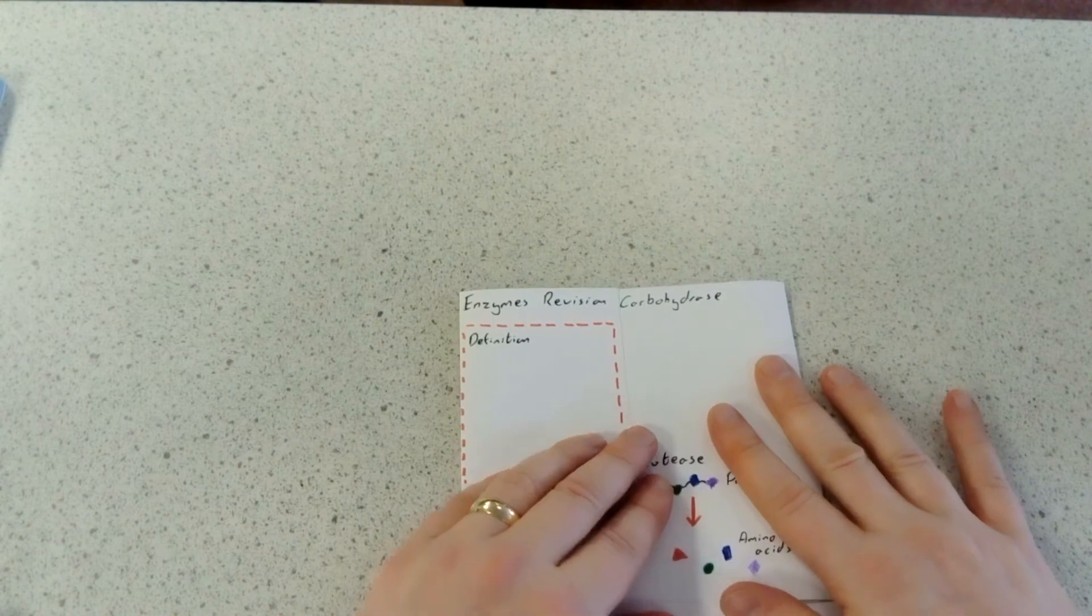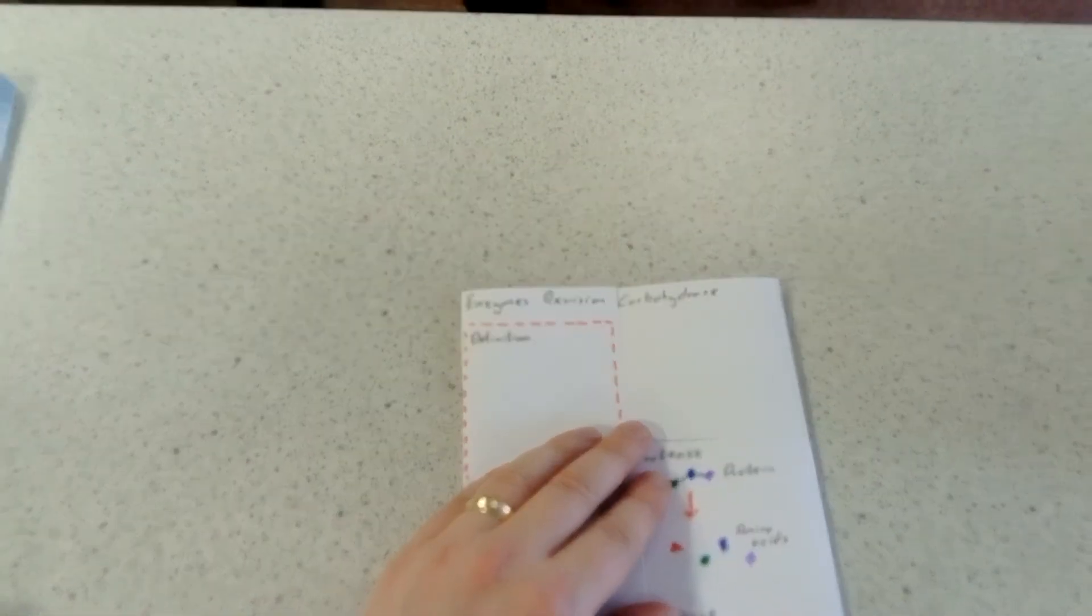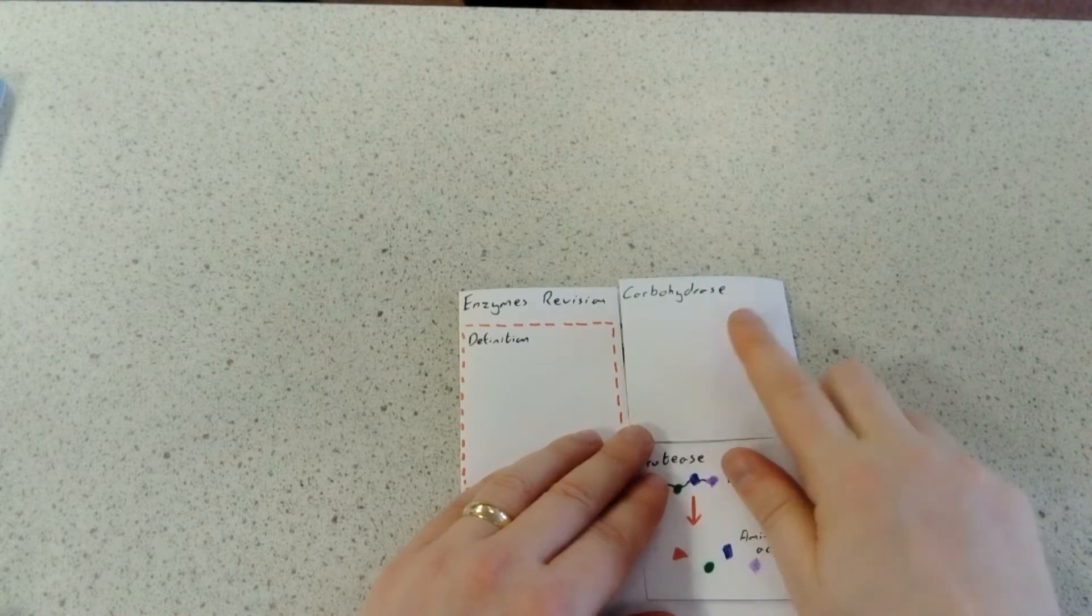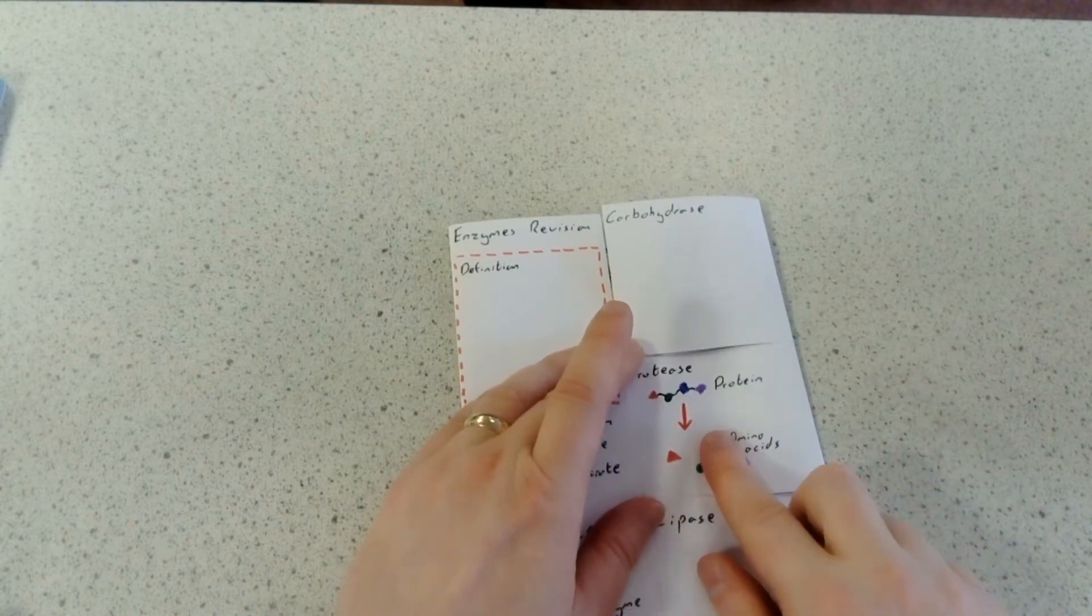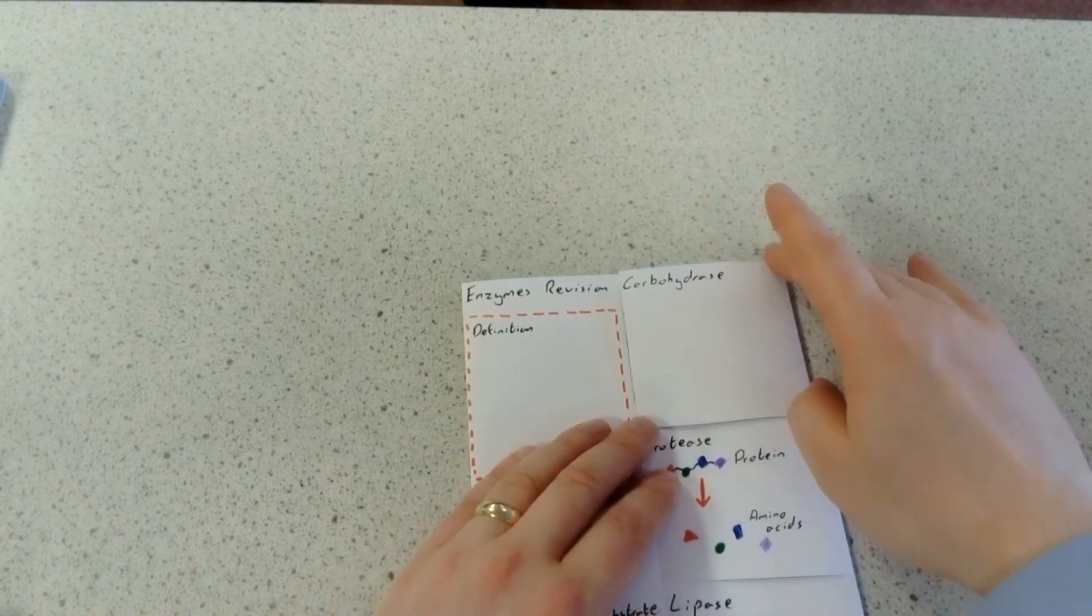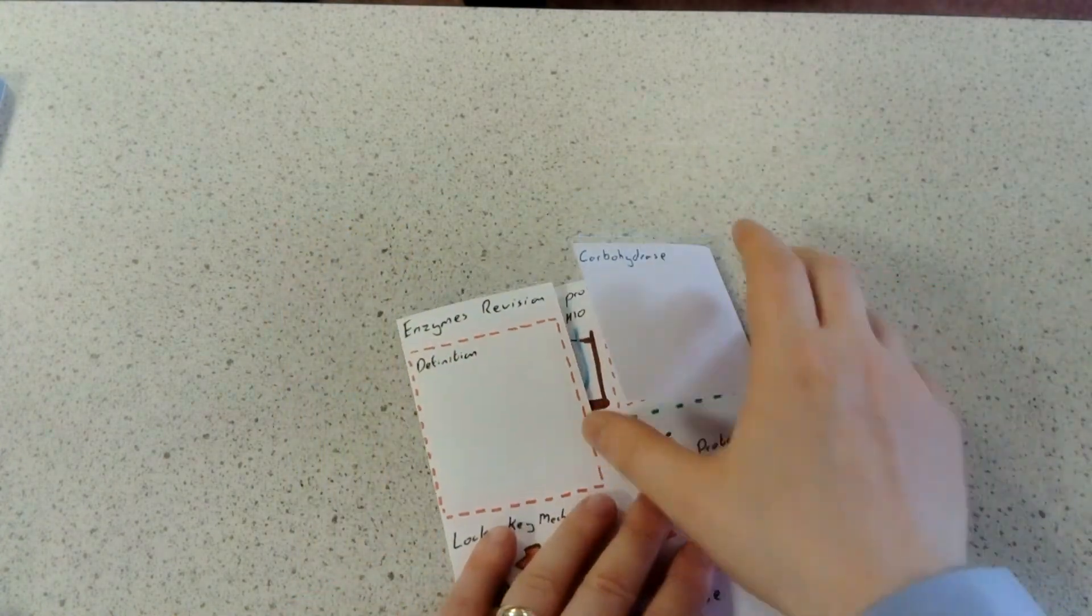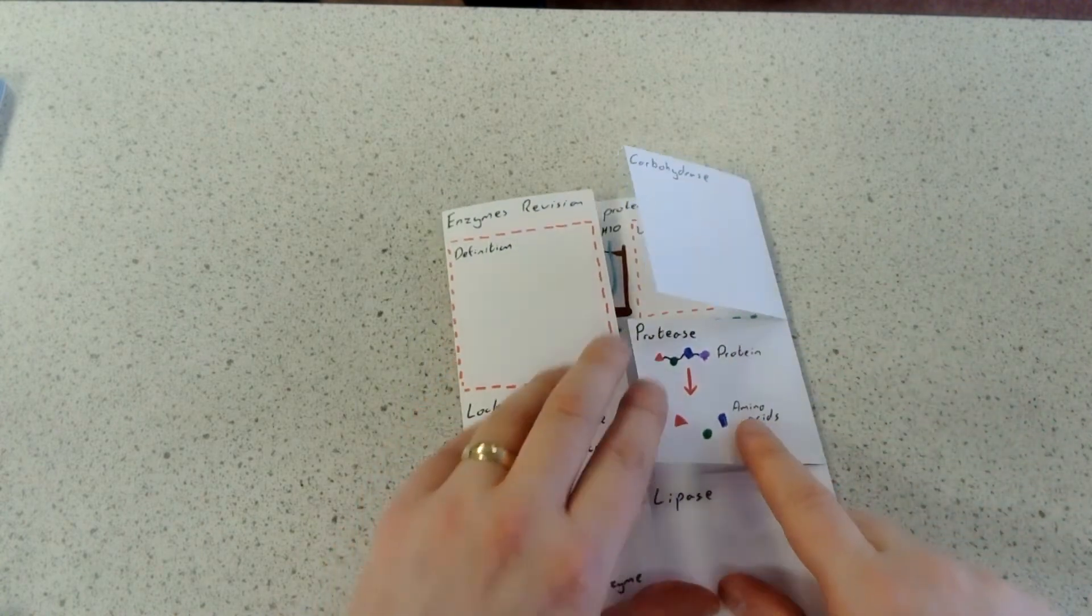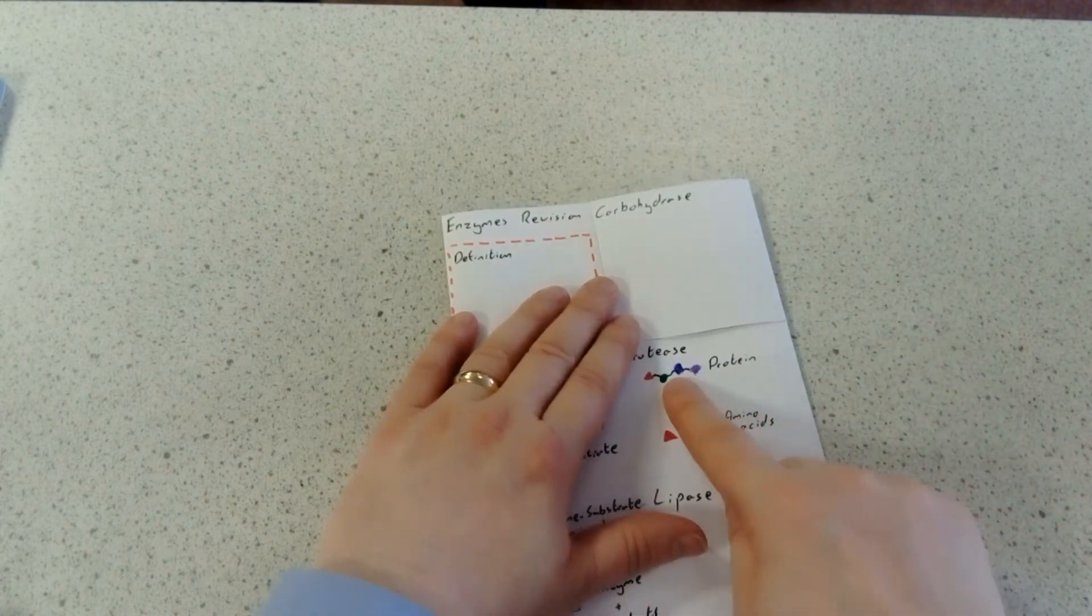On your other side, include three types of enzymes you need to be aware of: carbohydrases, proteases, and lipases. Split that part into three so it opens up like that. On the front, draw yourself a good diagram to show what's happening.